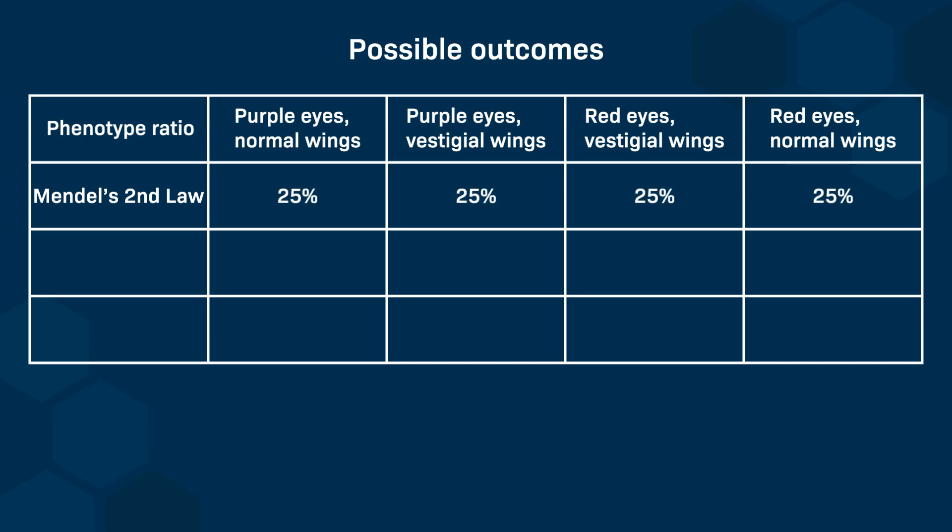Two phenotypes are the parental phenotypes: progeny with red eyes and normal wings, or purple eyes and vestigial wings. The other two are recombinant phenotypes: progeny with red eyes and vestigial wings, or purple eyes and normal wings. However, since both genes are on the same chromosome and should segregate together, we would expect only 50% of each parental phenotype and no recombinant phenotypes.